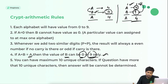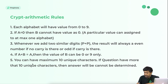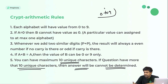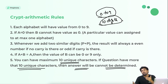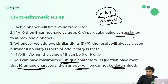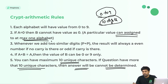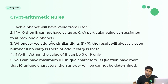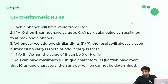Rule 5: You can have a maximum of ten unique characters. If the question has more than ten unique characters, the answer is 'cannot be determined,' because we only have digits zero to nine — ten digits total — and each digit can be assigned to at most one alphabet. These rules are very important to follow before starting any cryptarithmetic problem.